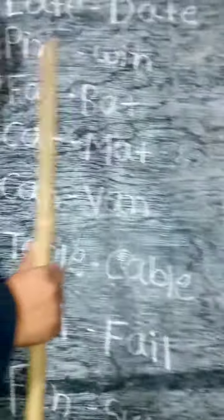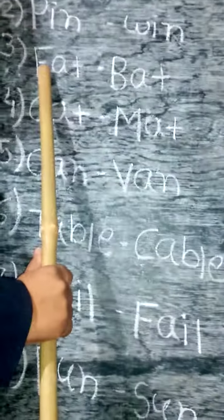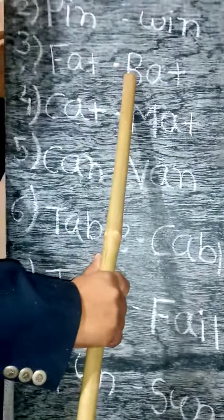F-A-T, fat. B-A-T, bat. Fat means jar. Ani, bat means bat.